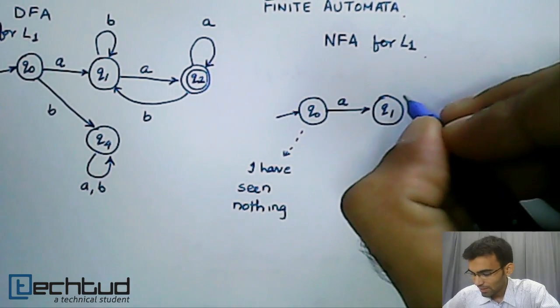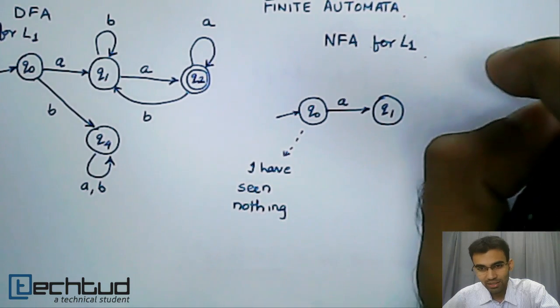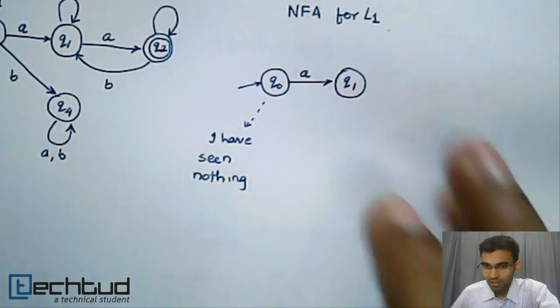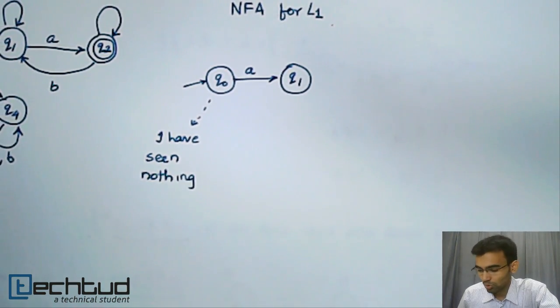Q1 represents I have seen exactly one A in the beginning. Q1 represents I have seen exactly one A.